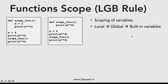The LGB rule applies to function scope. In the first case, the print statement finds x inside the function, so it prints the local value — that's local scope. In the second case, the function doesn't find x locally, so it goes outside and checks whether x exists in the program. It finds x equal to 4, so it prints that — this is called global scoping.